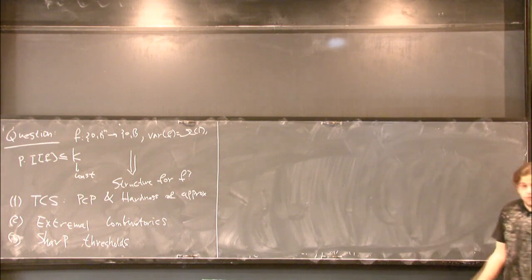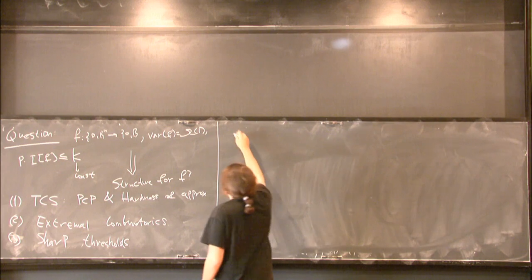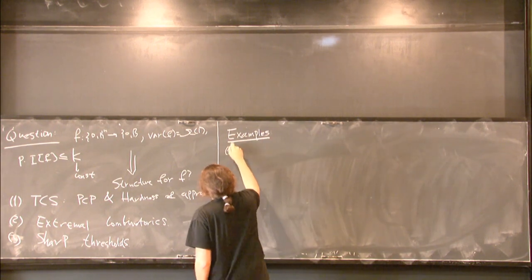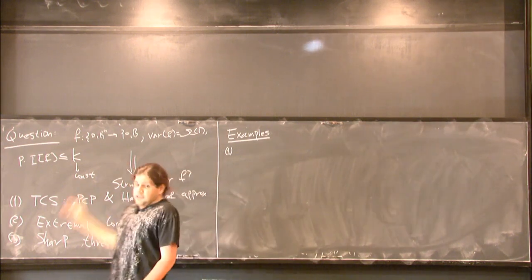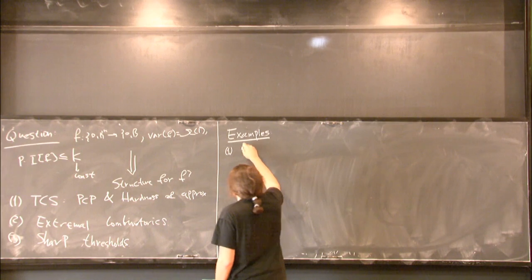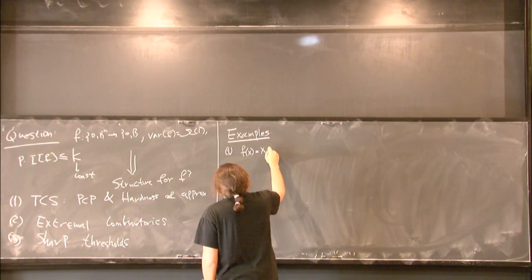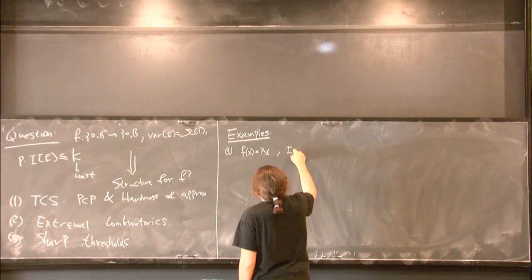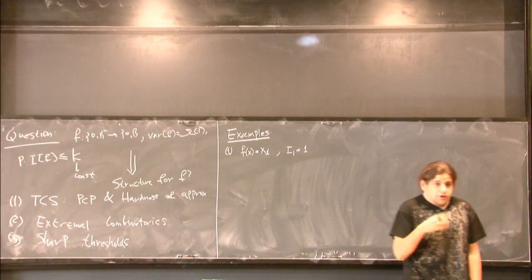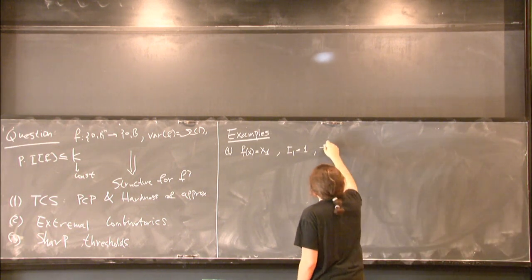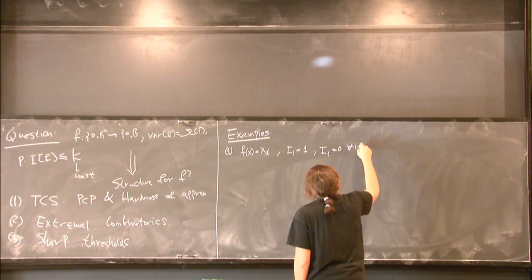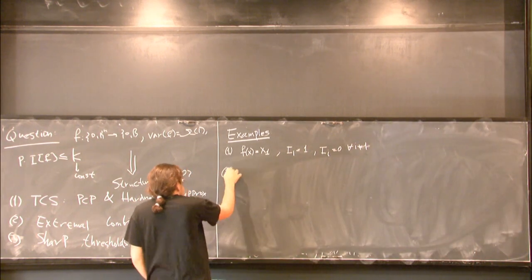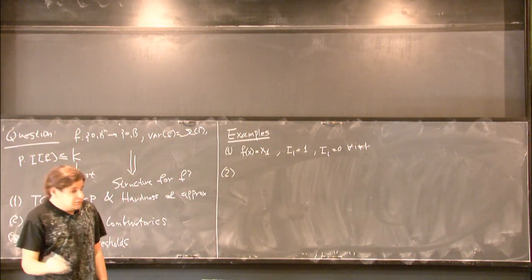So, let's see what we can say about such functions. And let's begin with several examples. How can we design a function that has a small total influence? Here is a very trivial example. Just define the function to depend only on its first coordinate. Because then the influence of the first variable is 1, but for each other variable, the influence is 0. And more generally, you can take actually any function that depends on not too many variables.